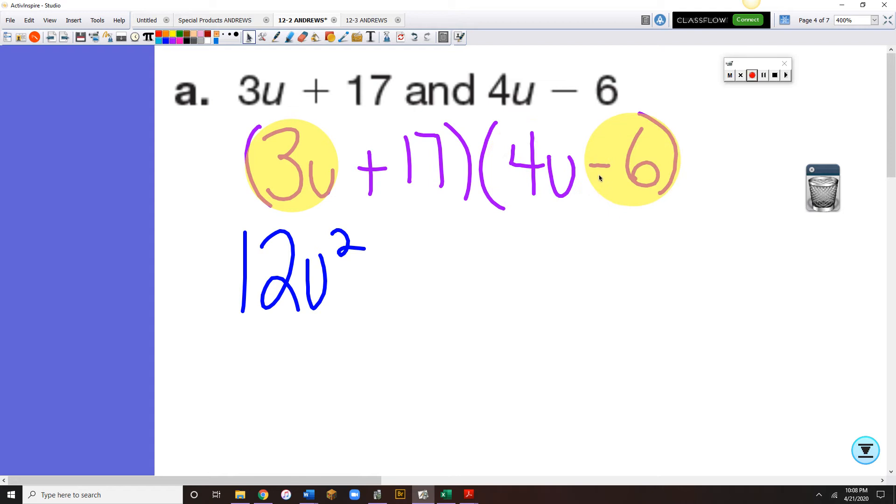3u times 4u would be 12u squared. Now, when I multiply 3 and 6, we get 18, carry down the u, but since the 3 is positive, and the 6 has a subtraction, remember when we take the 6 out of the problem, the subtraction sign is only a subtraction while it's in the problem. When I take the 6 out and look at it individually, that sign becomes a negative. So a positive times a negative would be a negative 18u, and then when we plug the 18u back into the equation, the negative becomes a subtract.